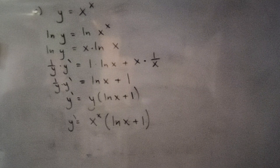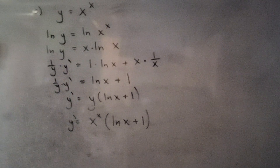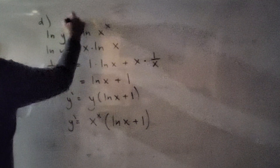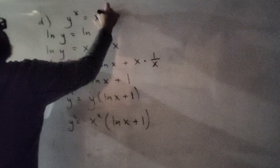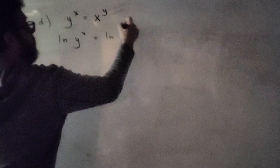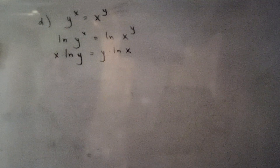One more example: y to the x equals x to the y. This is similar to before because variables appear as both base and exponent, but now it's an implicit expression rather than explicitly solved for y. Taking the natural log of both sides and using property 3 to bring exponents down as coefficients: x times natural log of y equals y times natural log of x. The algebra is done; now we take derivatives.